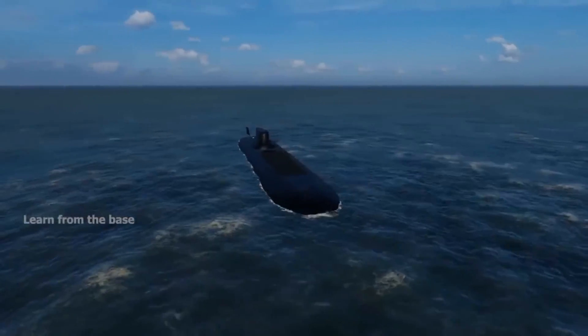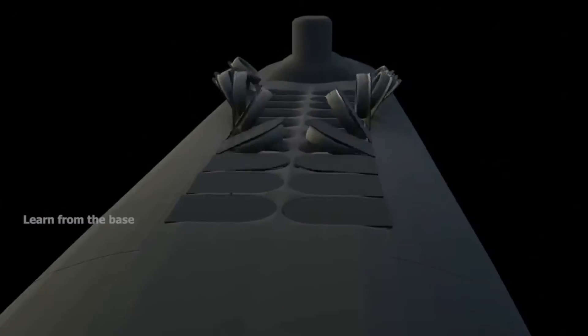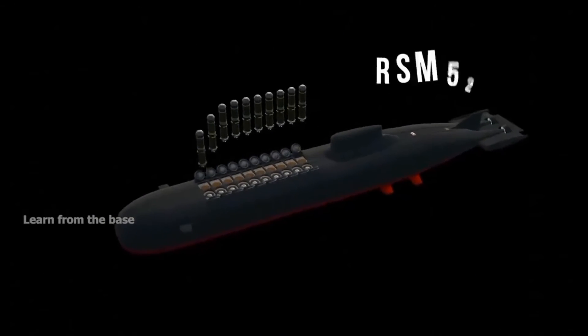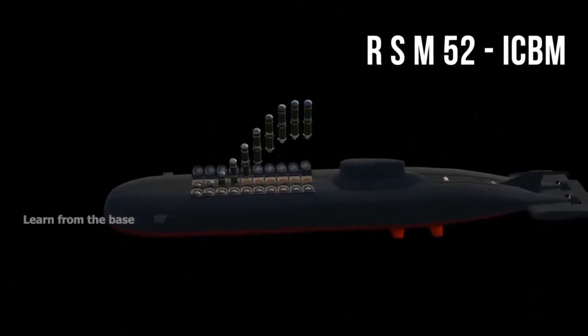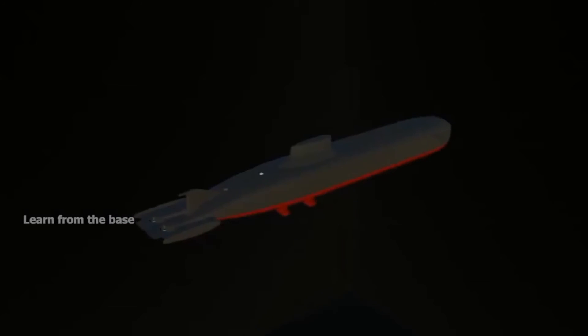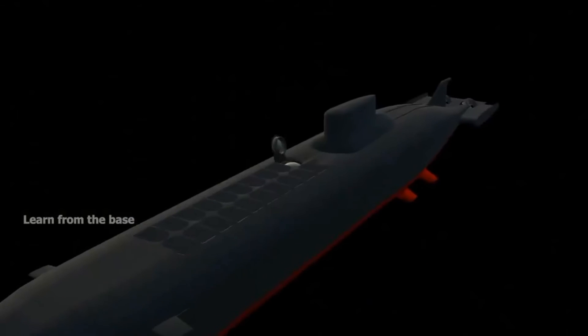Nuclear submarines carry a wide array of offensive and defensive weapons. The primary weapon system is composed of 20 RSM-52 intercontinental ballistic missiles. The two rows of missile launch tubes are situated between the main hulls. Each missile consists of 100 kilotons of nuclear warheads, enough to destroy a one kilometer radius.